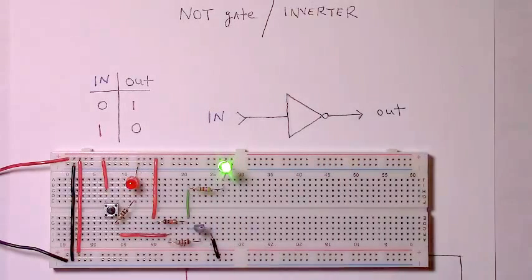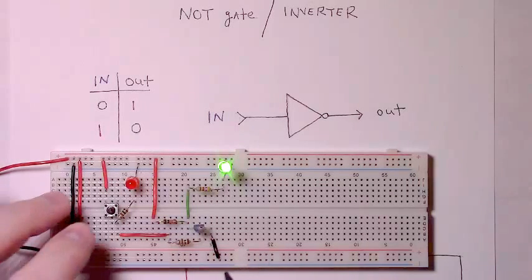And the circuit we'll be building, or have built by the end of this video, will look like this one. We'll be using a single NPN transistor as the core component for this NOT gate. And how does it work?